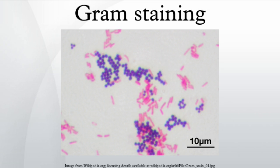When a decolorizer such as alcohol or acetone is added, it interacts with the lipids of the cell membrane. A Gram negative cell loses its outer lipopolysaccharide membrane, and the inner peptidoglycan layer is left exposed. The CV-iodine complexes are washed from the Gram negative cell along with the outer membrane. In contrast, a Gram positive cell becomes dehydrated from ethanol treatment. The large CV-iodine complexes become trapped within the Gram positive cell due to the multi-layered nature of its peptidoglycan. The decolorization step is critical and must be timed correctly. The crystal violet stain is removed from both Gram positive and negative cells if the decolorizing agent is left on too long.